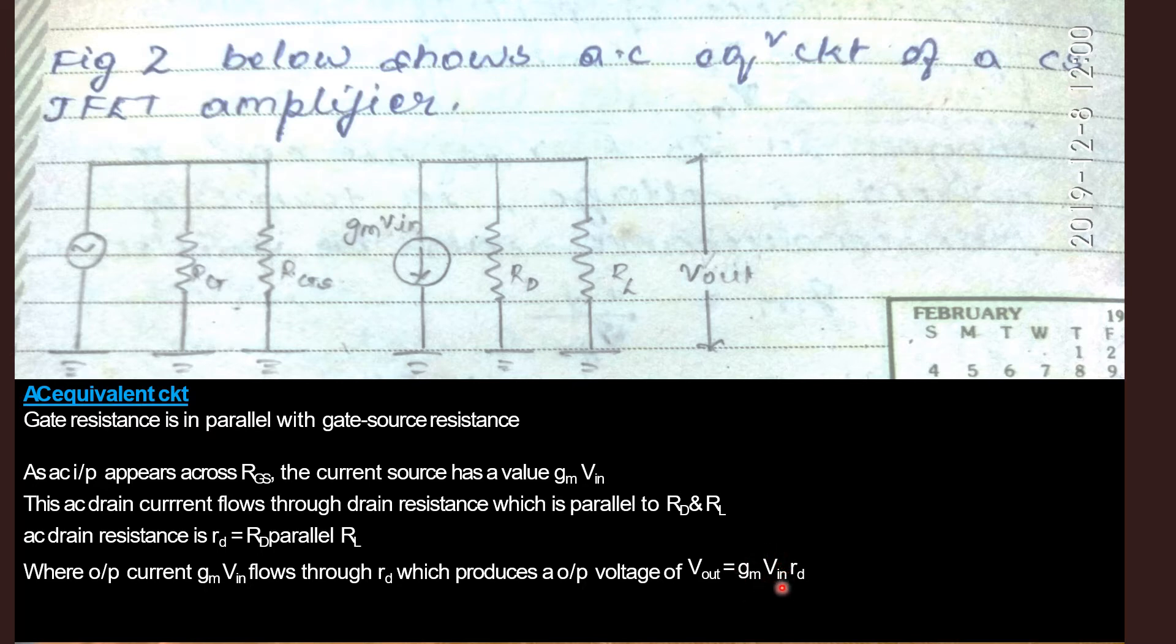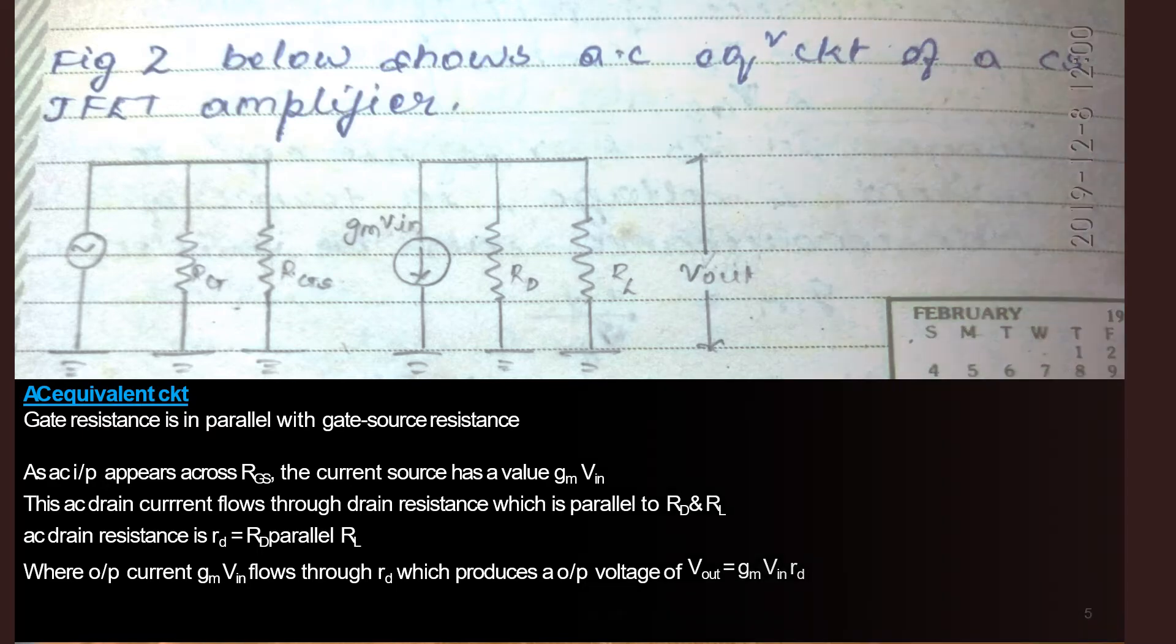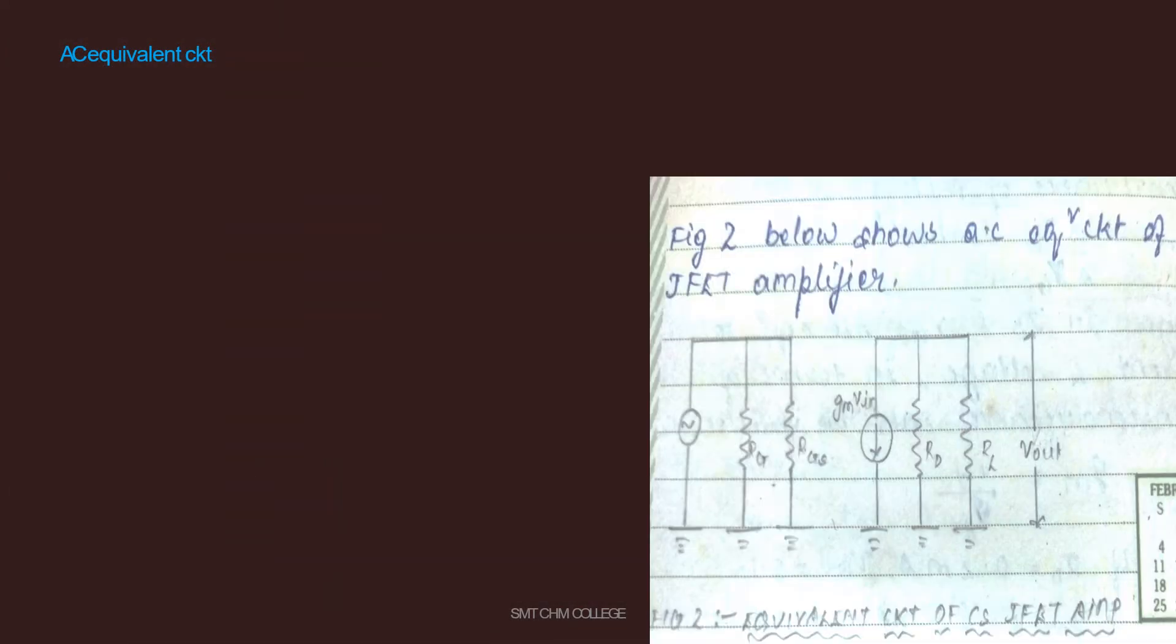That is the current times the resistance RD. Divide this equation throughout by VIN. We get the gain, Vout upon VIN, which is equal to GM into RD. This is transconductance times the AC drain resistance.